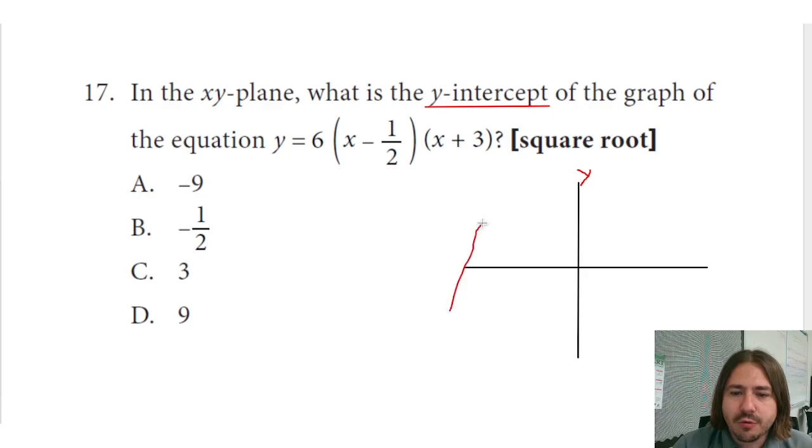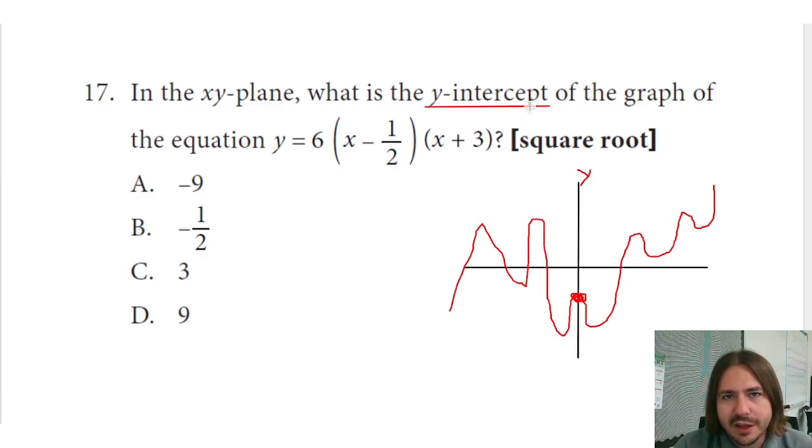No matter how crazy your graph is, if it does something like this, and this particular graph doesn't do anything nearly this complex, but let's just say it did. The point that we're looking for is right here. It's where it's crossing the y-axis. That's what it means by y-intercept.